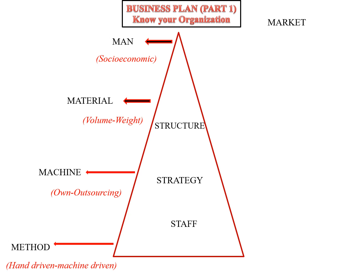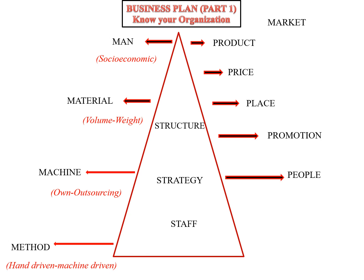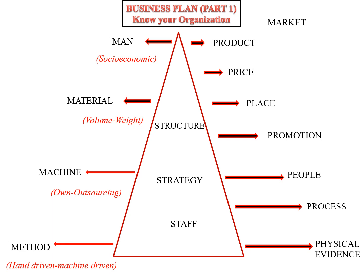When thinking about the market, if it is a product-based market, then it will be 4P: product, price, place, and promotion. And if it is a service-based industry, then another 3P — people, process, and physical evidence — also decide the product and services coming from the organization.